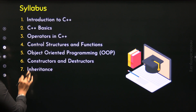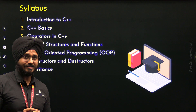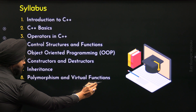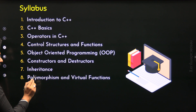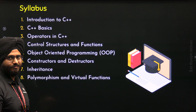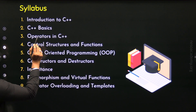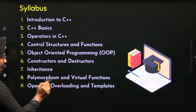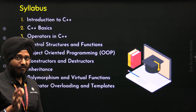Chapter 7 is about inheritance. We will understand different types of inheritance including single inheritance, multiple inheritance, multi-level inheritance, and hierarchical inheritance. Chapter 8 is about polymorphism and virtual functions — one of the pillars of OOP — and then we move to virtual functions, precisely learning what a pure virtual function is. Chapter 9 is about operator overloading and templates, covering operator overloading in detail, followed by class templates and function templates.